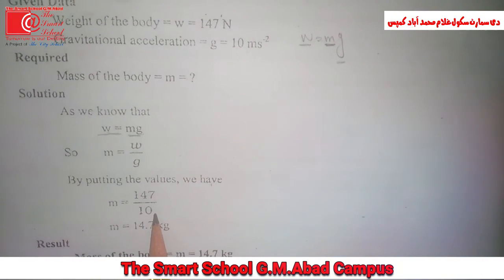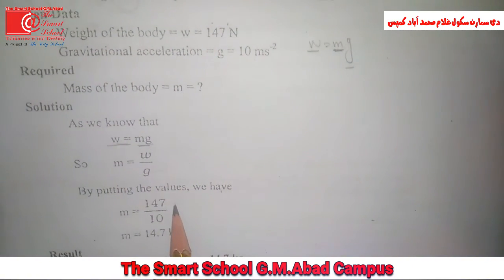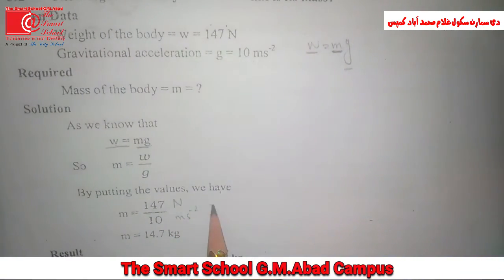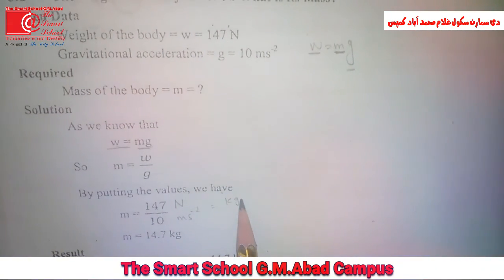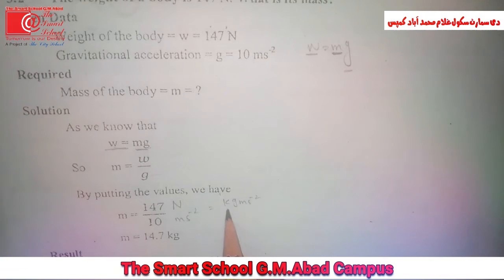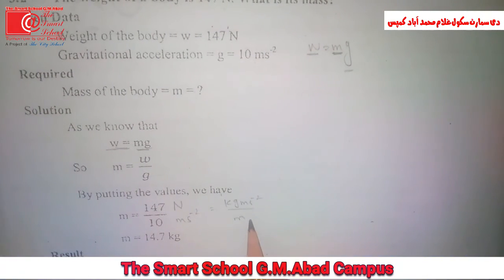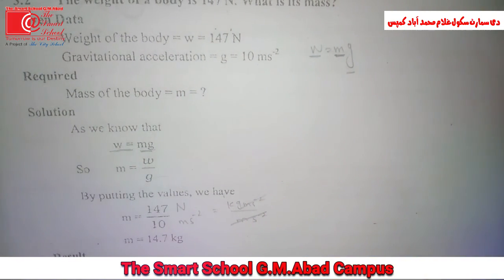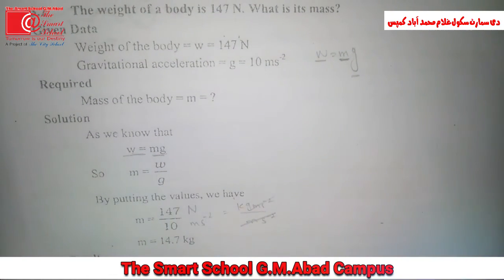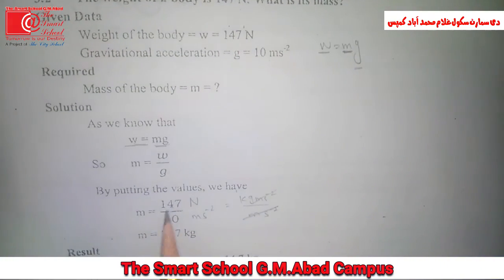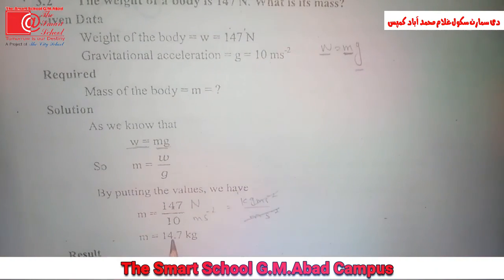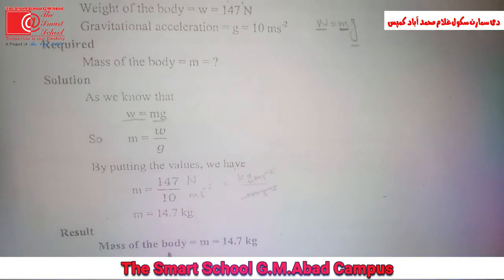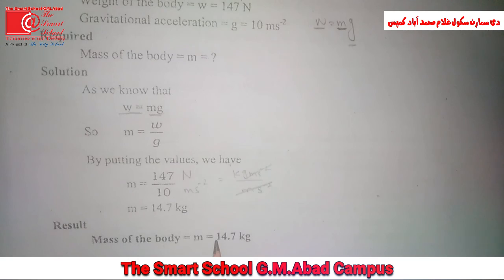m is equal to 147 divided by 10. Newton is equal to kg meter per second square and acceleration meter per second square. So the unit acceleration is cut. So we get the mass of the body is equal to 14.7 kg. Result: mass of the body is 14.7 kg.